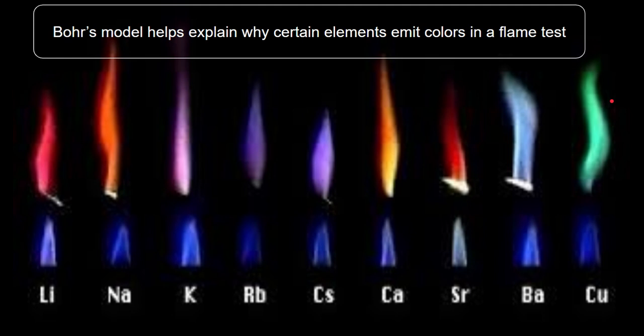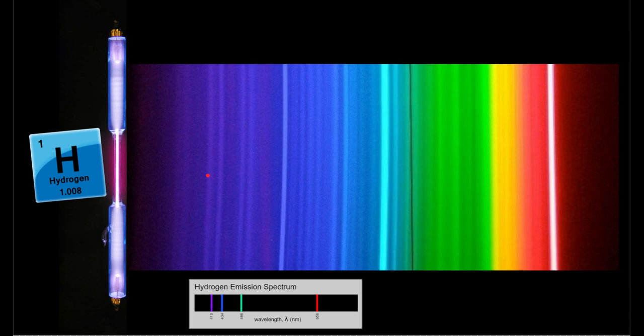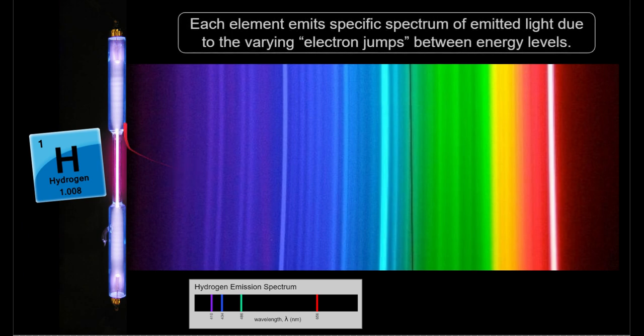Why is this important, or how does this apply? Bohr's model helps explain why certain elements emit colors in a flame test. Maybe you did a flame test in class. That's where we take certain substances, put them in fire, and see if they emit certain colors. Many elements emit certain frequencies of color, and that's because of their Bohr models. If you look at hydrogen here, for example, this right here is called a discharge tube. It's filled with hydrogen gas, and when you zap it with electricity, it emits certain frequencies of light. You can see it very simplified down here.